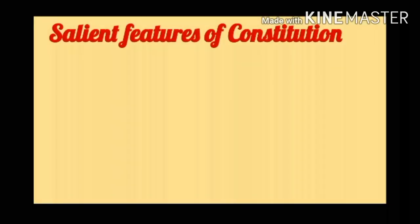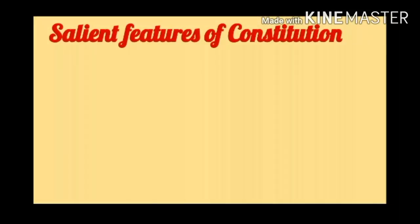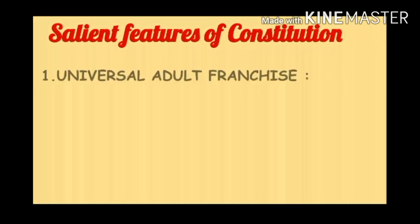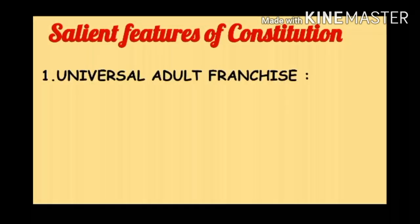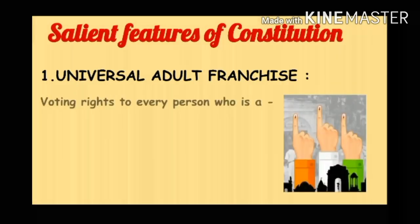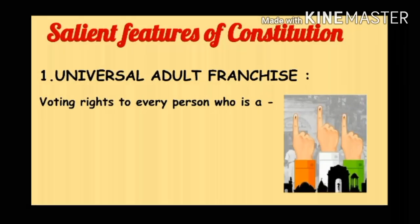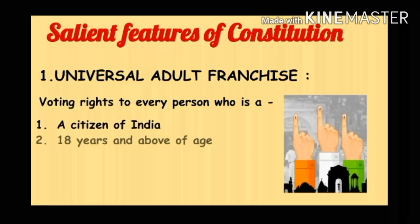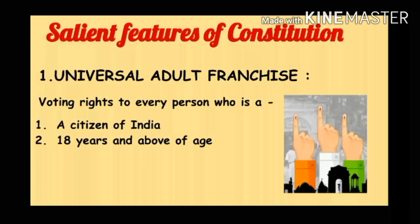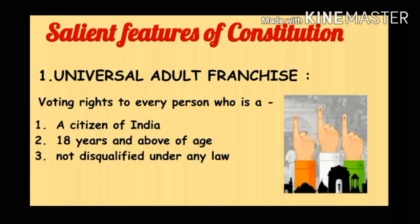Salient Features of the Constitution. First, Universal Adult Franchise. Our constitution is based on the principle of universal adult franchise. It means that all citizens of India who are 18 years and above of age have the right to vote, provided they are not otherwise disqualified.